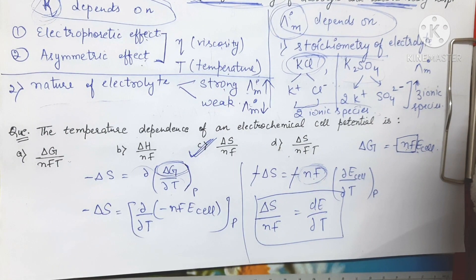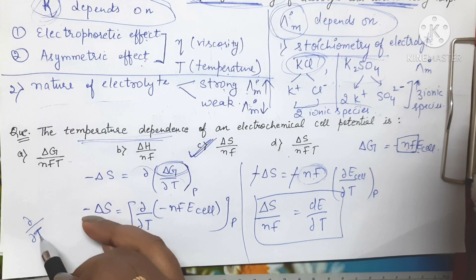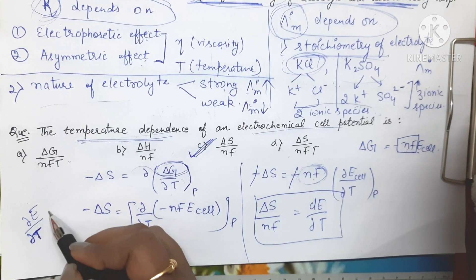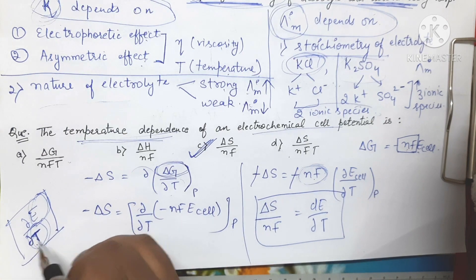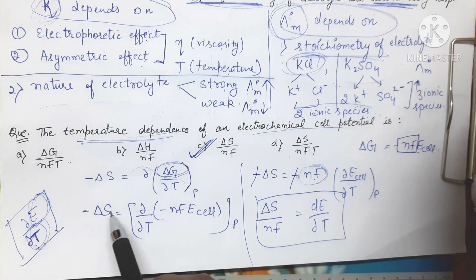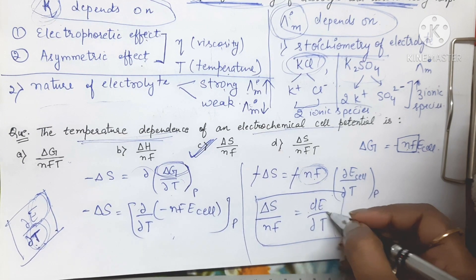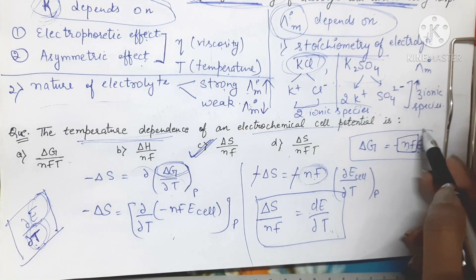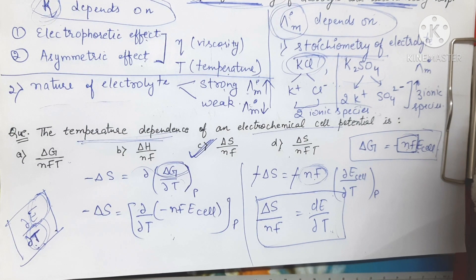Looking at the four options, option C is correct. They are asking about the temperature dependence — that is, ∂E/∂T — of the electrochemical cell potential E. Using the Gibbs-Helmholtz equation, we found that the change in EMF with respect to temperature equals ΔS/nF, where nF represents the amount of electricity passed. Thank you so much for watching.